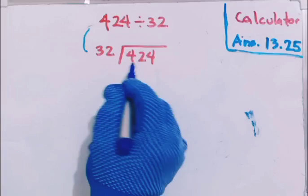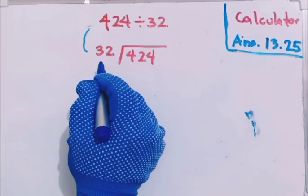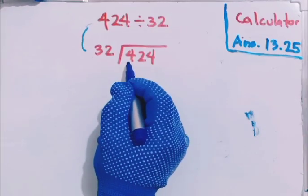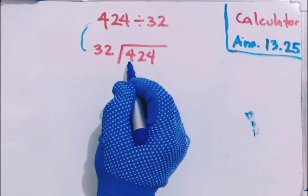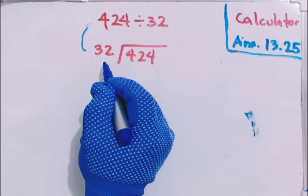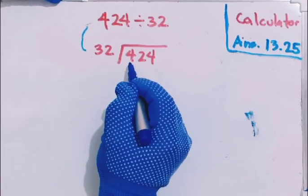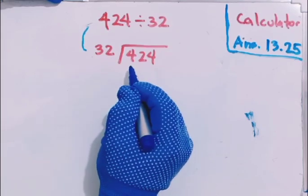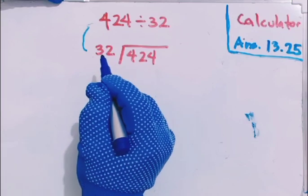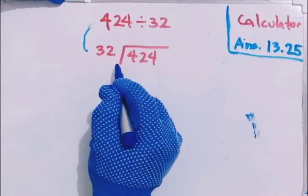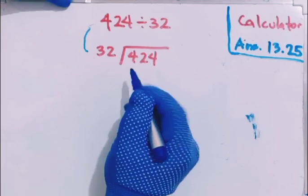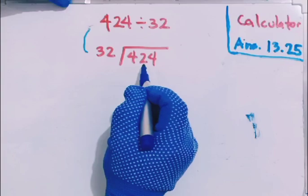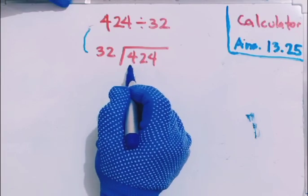Again, 424 is your dividend and 32 is your divisor. Now, the first rule is let's begin with a single digit: 4 divided by 32, can it be? No, because your dividend is lower than your divisor. Therefore you cannot divide. If it's not equal or lower than your divisor, it cannot be. So what we should do is we have to add the two.